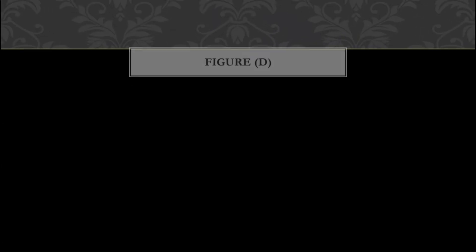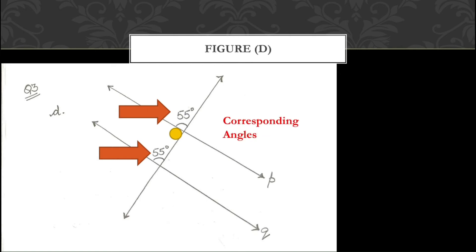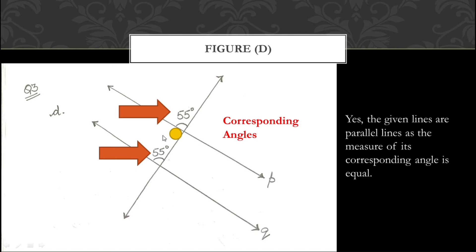Now let us move on to part D. Here we check whether line P and line Q are parallel. The information given is one angle of 55° and then another angle of 55°. Skipping one angle and looking at the next angle on the same side of the transversal gives the corresponding angle. Both corresponding angles are 55°, so their measurements are equal. Therefore the given lines are parallel because the measure of corresponding angles is equal.